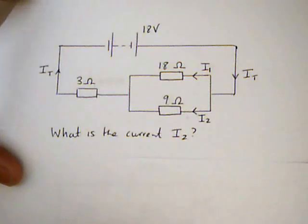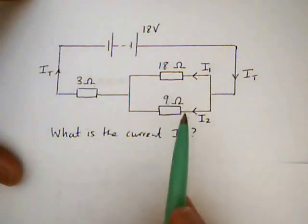This is a circuit similar to several that are in this week's homework, and I'm going to show you how to find the current I2 in this part of the parallel network.